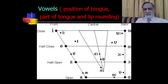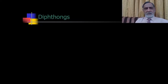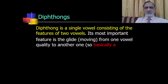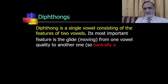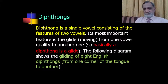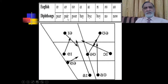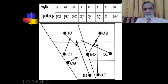Then diphthongs. A diphthong is a single vowel consisting of the features of two vowels. Its most important feature is the glide from one vowel sound to another — the two vowel sounds are combined and it glides from one to the other. Basically, a diphthong is a glide. In the diagram you can see eight diphthongs arranged in pairs, representing the sounds found in specific words. So there are eight diphthongs in total.